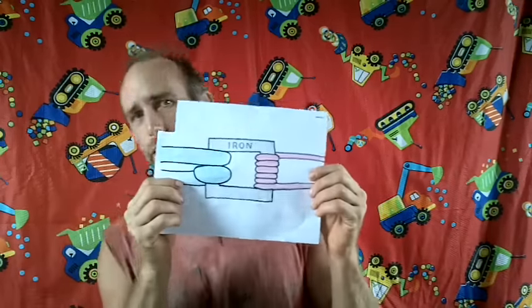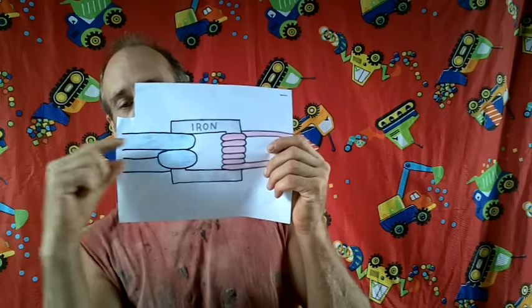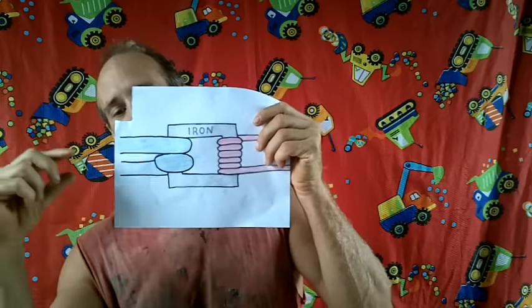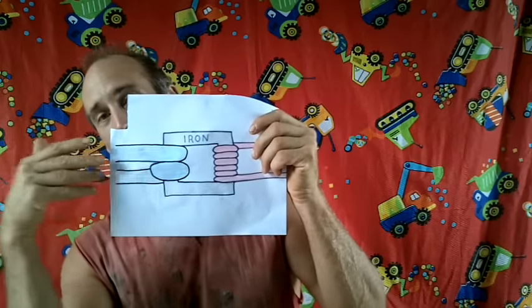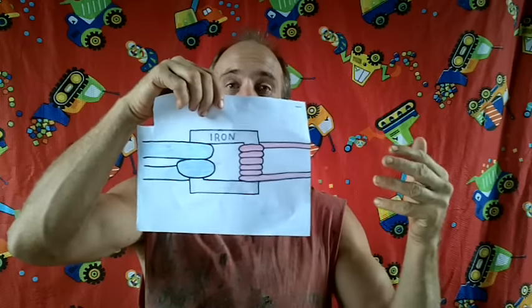And this is a basic drawing of what a basic transformer looks like. So over here, you have low voltage coming in, high voltage coming out, and where you've got the low voltage, you'd have a higher current, and where you'd have the higher voltage, you'd have a lower current.